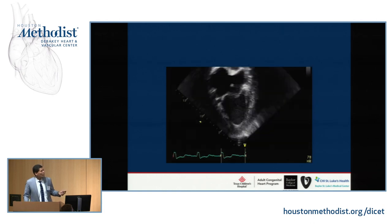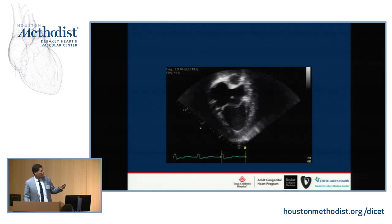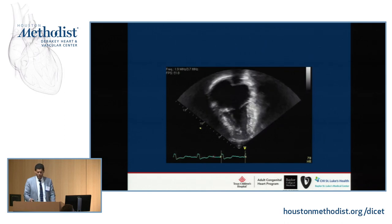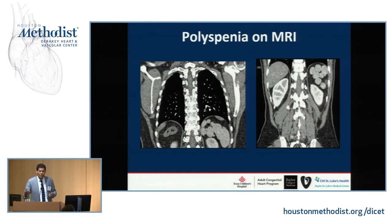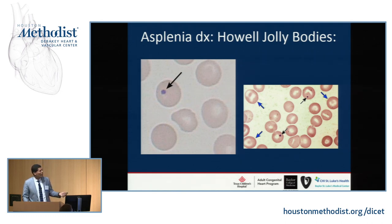Here's a patient we follow with heterotaxy — you can see a very abnormal tricuspid valve, an AV canal type defect. This patient ended up having a Fontan and did quite well, but also has a lot of systemic venous problems. These patients can have polysplenia but also functional asplenia — even though they have multiple spleens, they don't work very well. You can see this on MRI, and you can also look for Howell-Jolly bodies on peripheral smear. These inclusion bodies in red blood cells are a sign of abnormal splenic function.